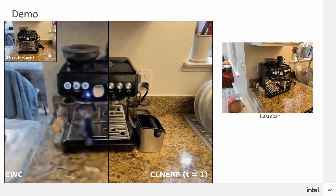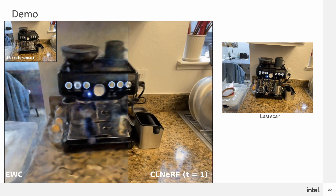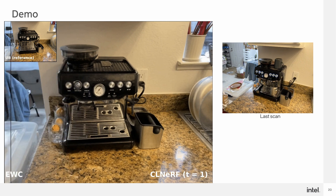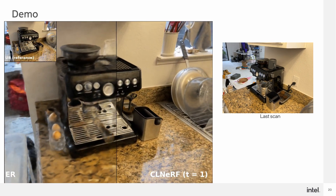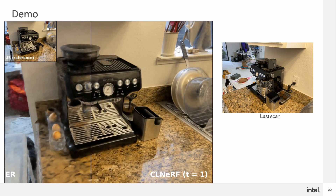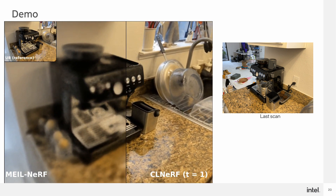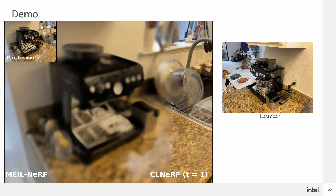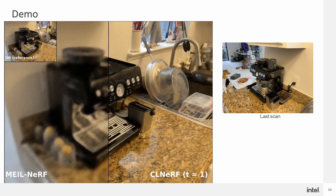EWC regularizes the change of important neurons to address forgetting. However, not using historical data at all makes it still not effective for continual learning of NeRVs. Experience replay stores historical images to prevent forgetting, but it performs badly when only a small amount of images can be stored. The concurrent work MayoNeRV uses biased sampling and complex loss design, which not only introduces extra hyperparameters, but also fails to converge on challenging scenes. CLNeRV effectively addresses forgetting using generative replay, resulting in a stable pipeline and much higher rendering quality.